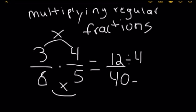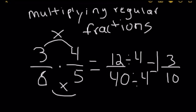So divide it by 4, divide it by 4, and that would equal 3 tenths. And then that you could box. That is your final answer.